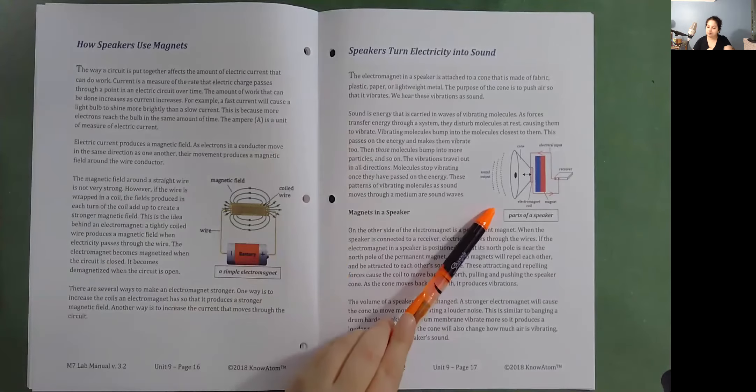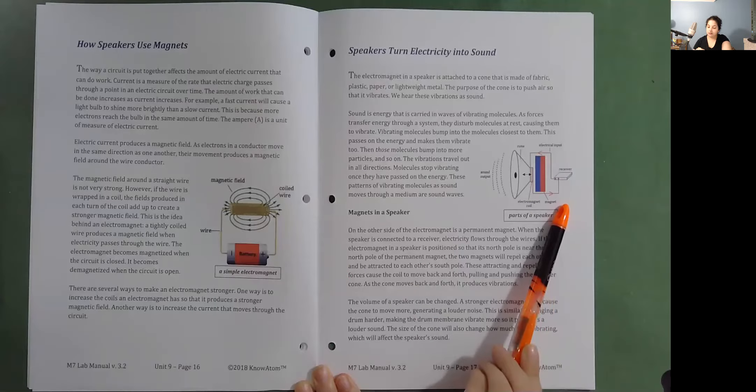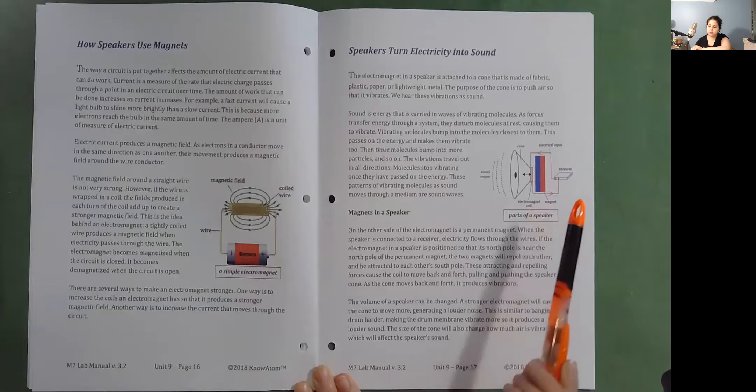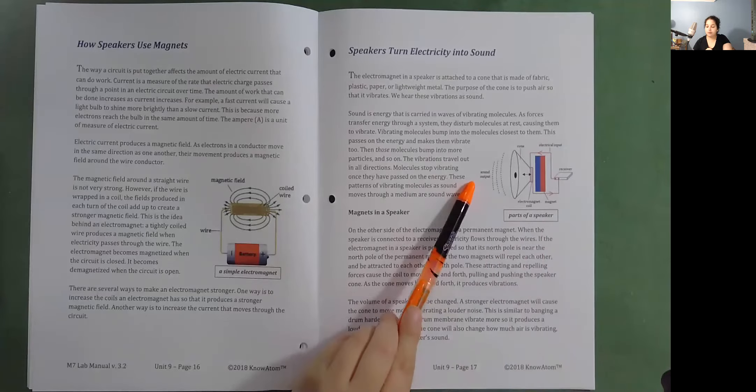Parts of a speaker. Receiver, magnet, electromagnet coil, electrical input, cone, sound output.